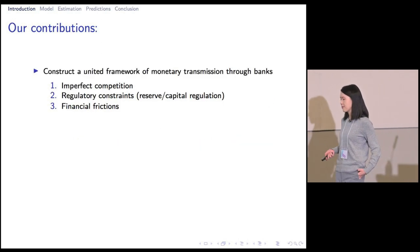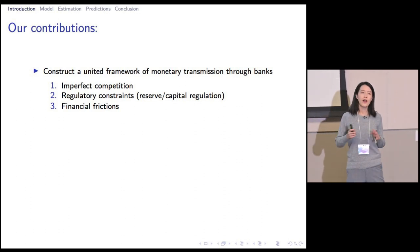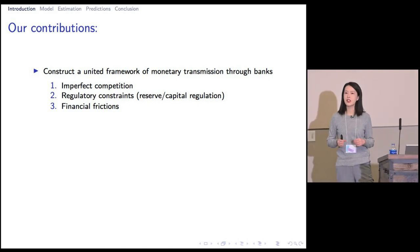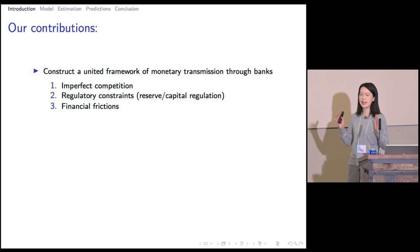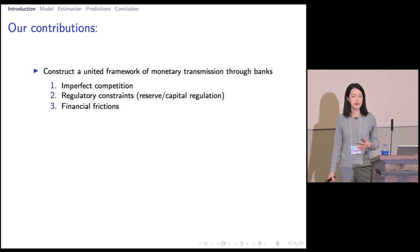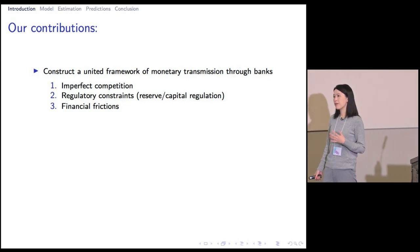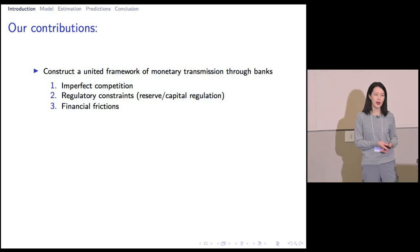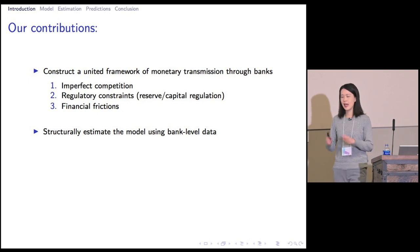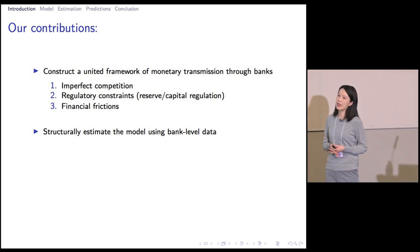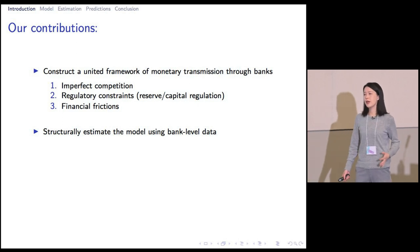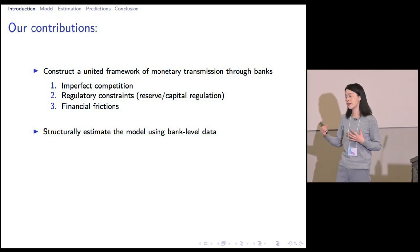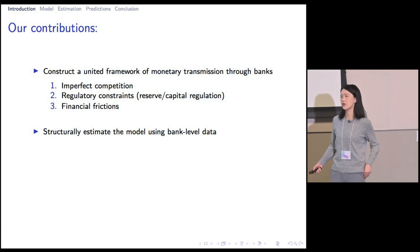In order to address these questions, we start by constructing a unified framework of how monetary policy is transmitted within the banking system, where we have imperfect competition among banks on both the deposit and the lending market, as well as the regulatory frictions. In addition, the banks might be facing some frictions when they try to seek funds externally, so we embed this external financing friction in the model as well. Then we go ahead and structurally estimate the model using bank-level data, which allows us to turn on and off these frictions counterfactually and see quantitatively how they influence the degree of monetary policy transmission.